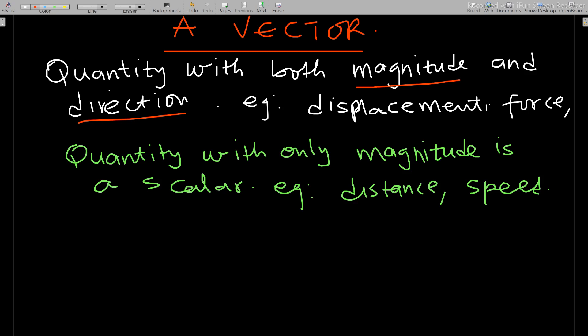A quantity with only magnitude is a scalar. So magnitude only — that is a scalar. That is a brief definition for a vector and a scalar. Let's go ahead and continue our lesson.